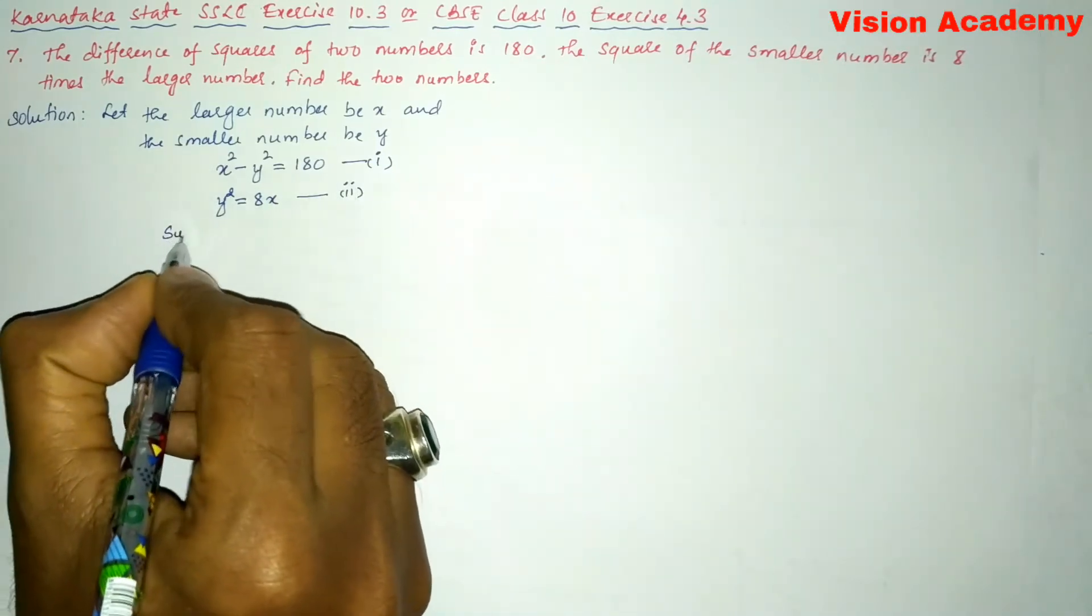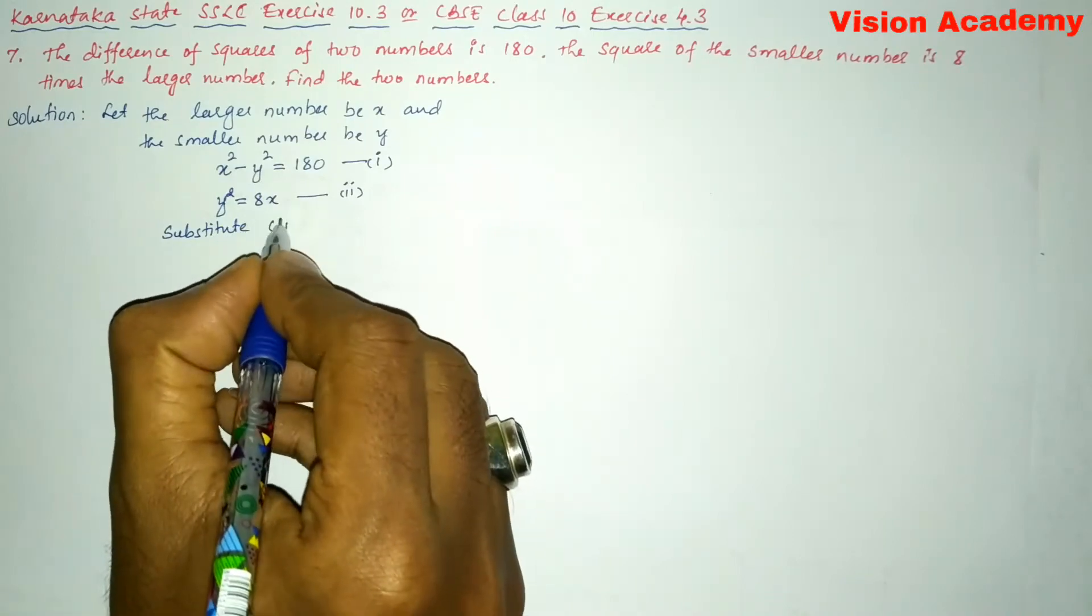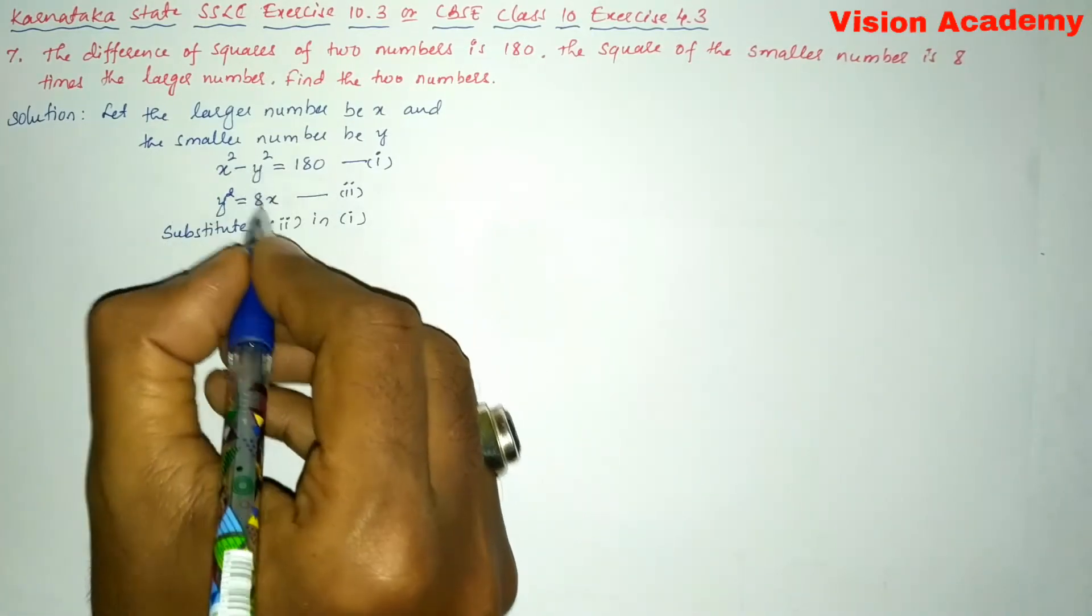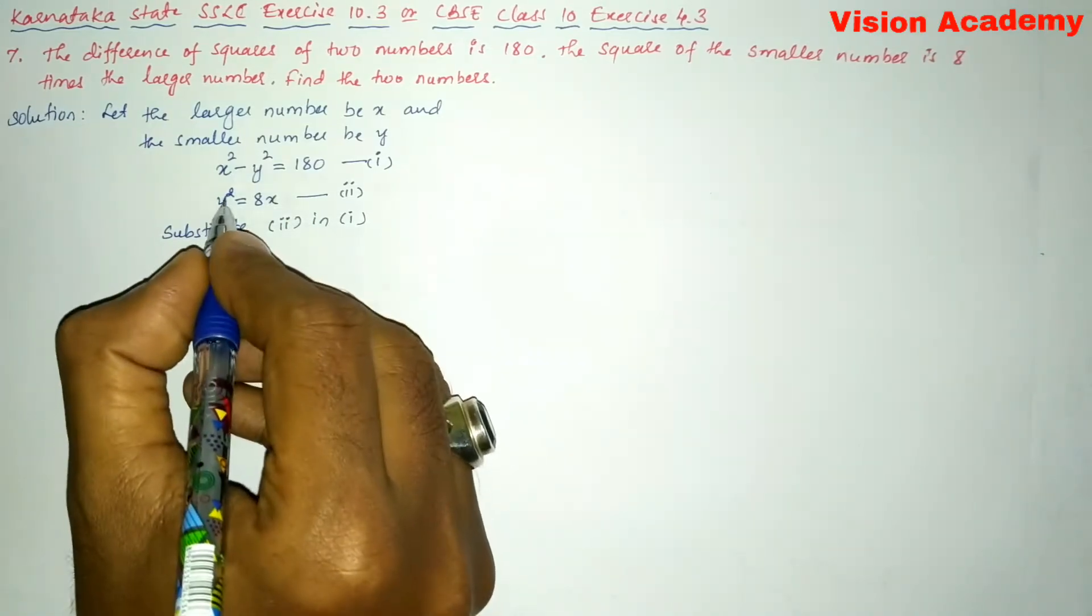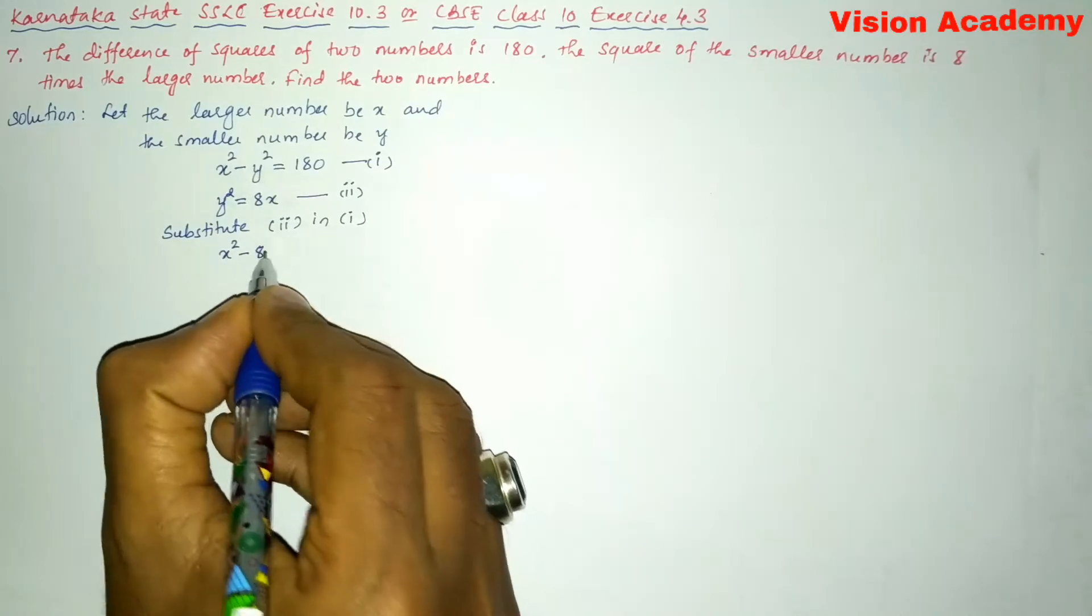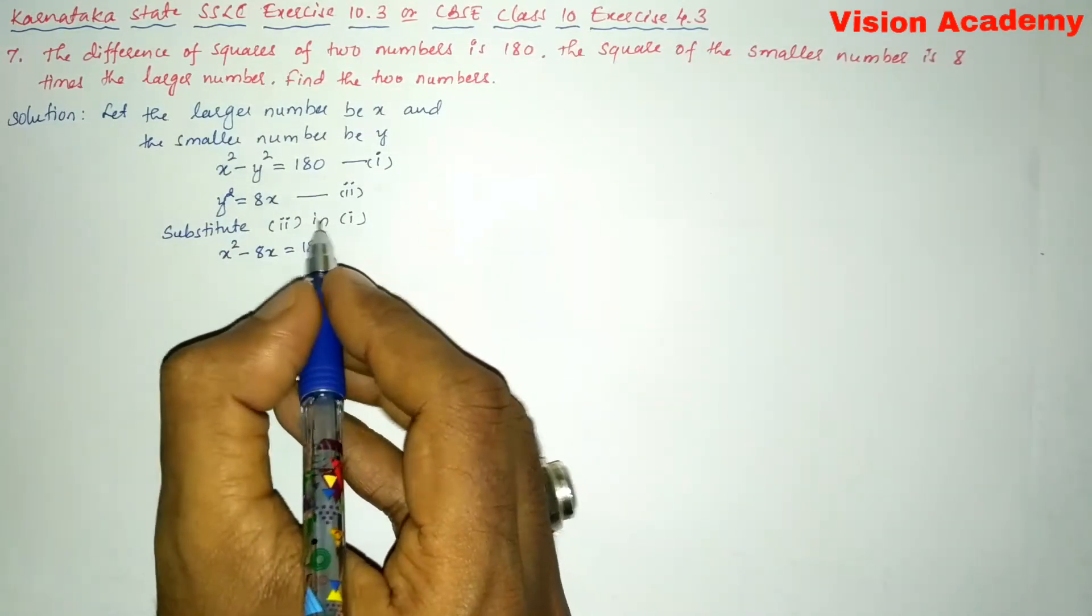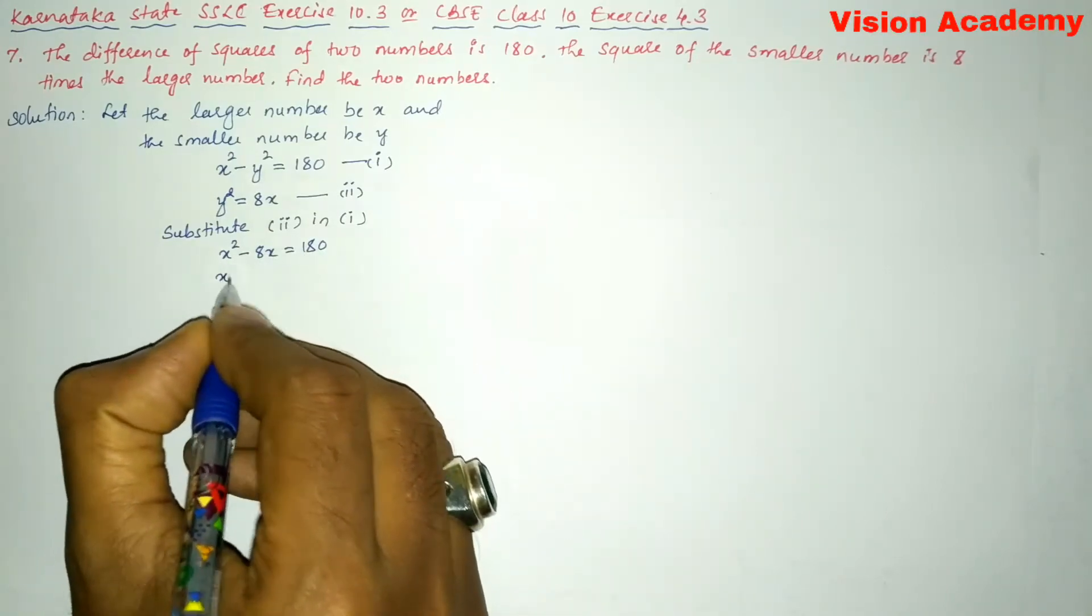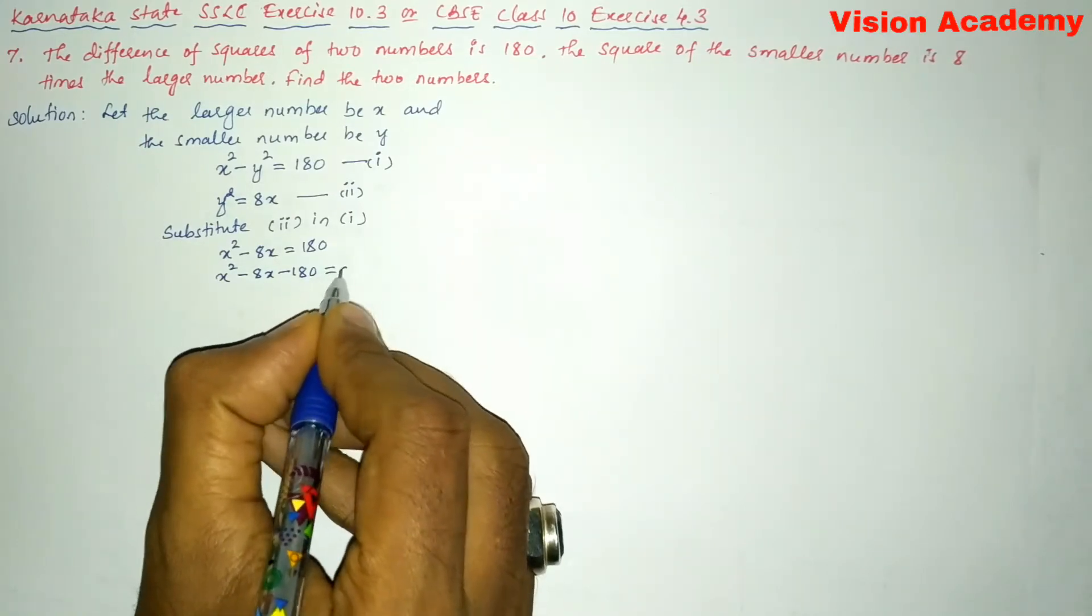Here we will substitute equation two in equation one. In place of y², substitute 8x. So we will write x² - 8x = 180. Now we will transform this 180 from RHS to LHS. It will become x² - 8x - 180 = 0.